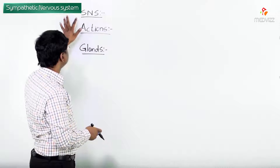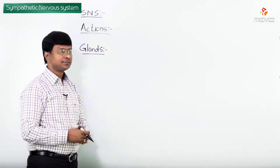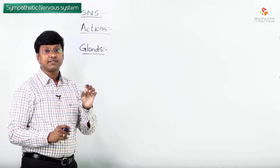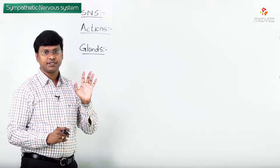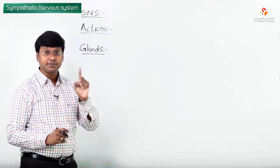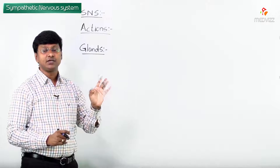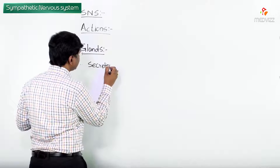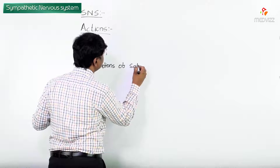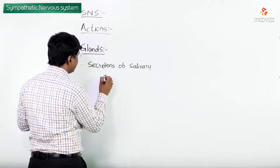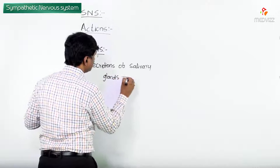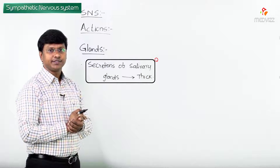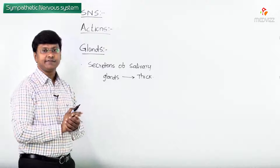Let me tell you the actions of the sympathetic nervous system on the glands. The secretions of the salivary glands become thick when the sympathetic nervous system is acting on them. That is one important point.